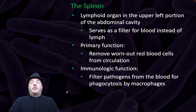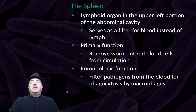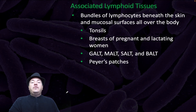The spleen is a lymphoid organ in the upper left portion of the abdominal cavity. It serves as a filter for blood instead of lymph. Its primary function is to remove worn-out red blood cells from circulation. Its immunologic function is to filter pathogens from the blood for phagocytosis by macrophages. Associated lymphoid tissues are bundles of lymphoid tissue beneath the skin and mucosal surfaces all over the body. They include tonsils, the breasts of pregnant and lactating women, GALT, MALT, SALT, BALT, and Peyer's patches.